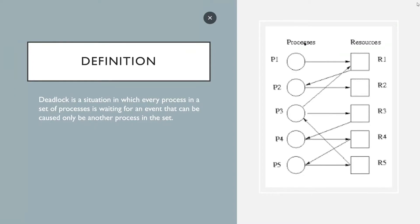Basically, consider a situation where we have some set of processes P1 to P5. Each of them is holding a resource and each of them is waiting for some other resource for their completion. If none of the processes are willing to give up their resources for other processes' completion, then each process will end up in an infinite loop and the process would never halt.